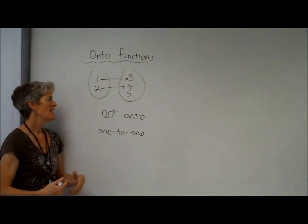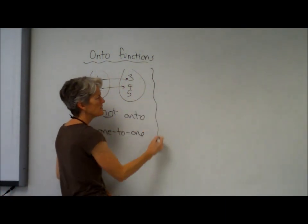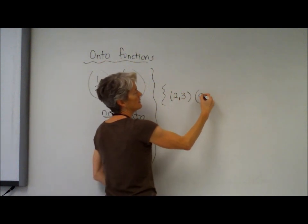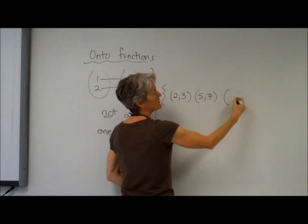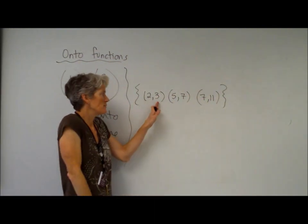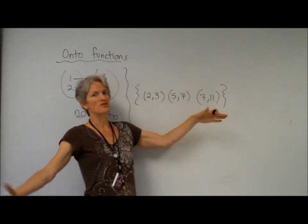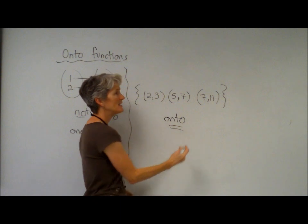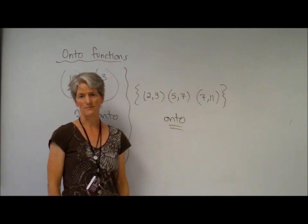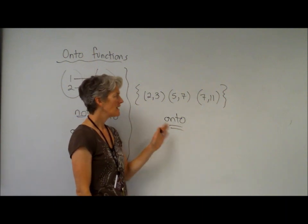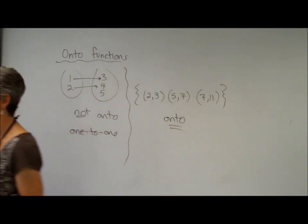Yeah, now onto is kind of funny because if you just have a list of ordered pairs, basically any list of ordered pairs is automatically going to be onto because all the potential y's are just the y's that show up there. So whenever you just have a list of data, it's always going to be onto.